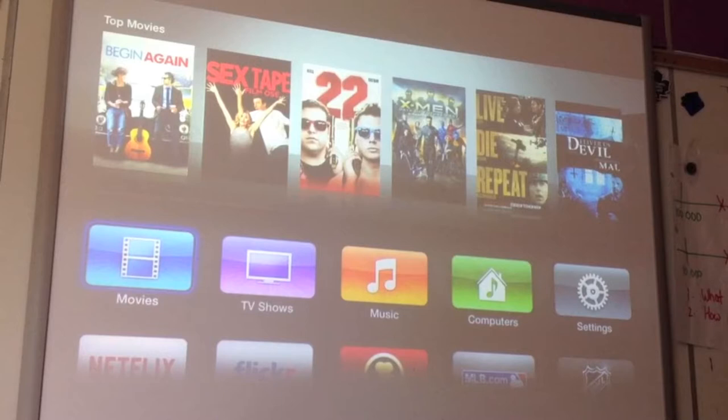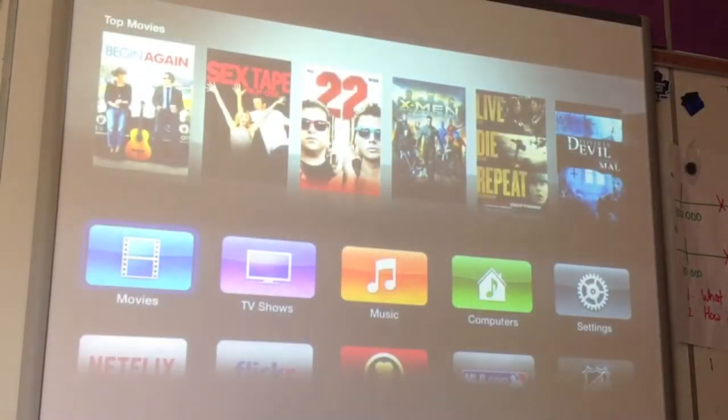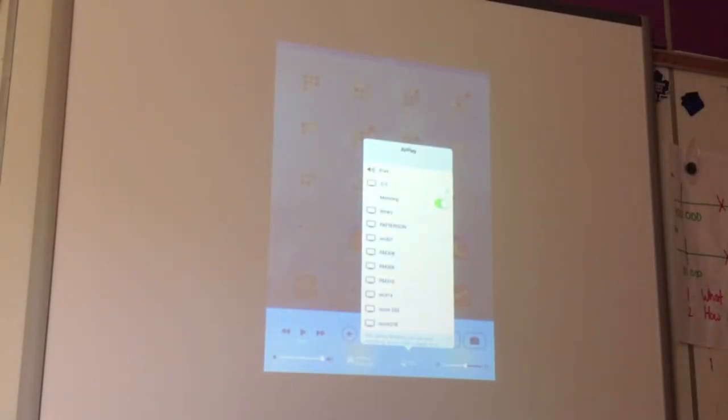Now we can begin mirroring. The next sequence will be explained slightly out of the natural order due to filming requirements. Once you've selected mirroring, the Apple TV will ask you to enter a code on the device you're looking to connect. Once you've entered this code, you'll be able to connect and mirroring will be available to you.